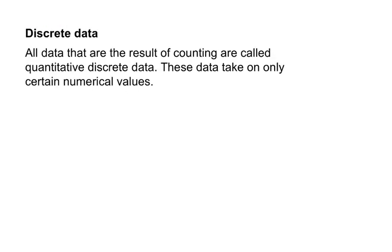Data has two main types. There's discrete data. When you count to five, you go 1, 2, 3, 4, 5. You didn't say 1, 1.1, 1.2, 1.3. So discrete data is those counting numbers, whole numbers. If we're going to poll people, you're not going to end up with 6.7 people — you're either going to have 6 or 7.